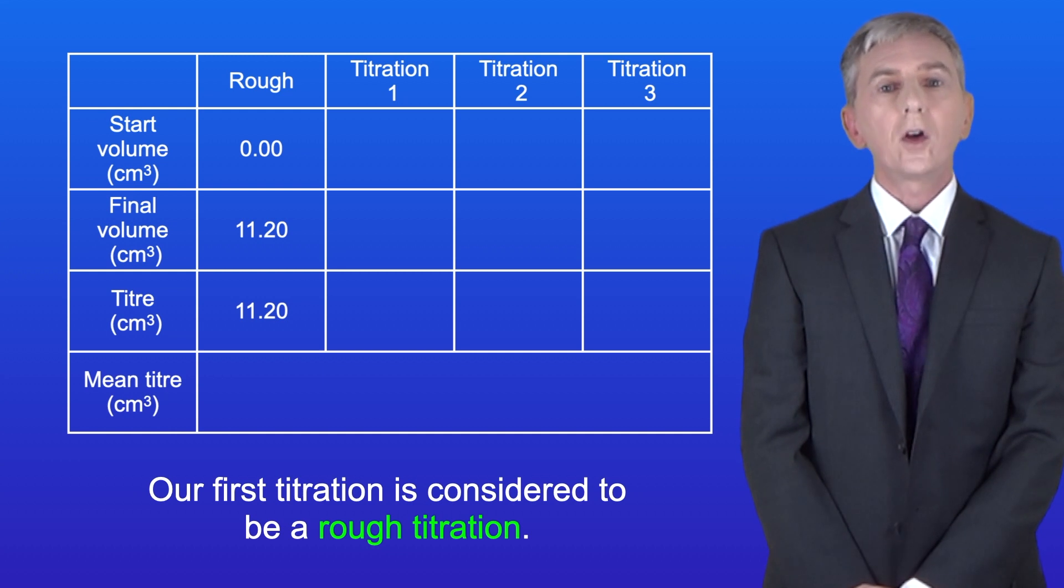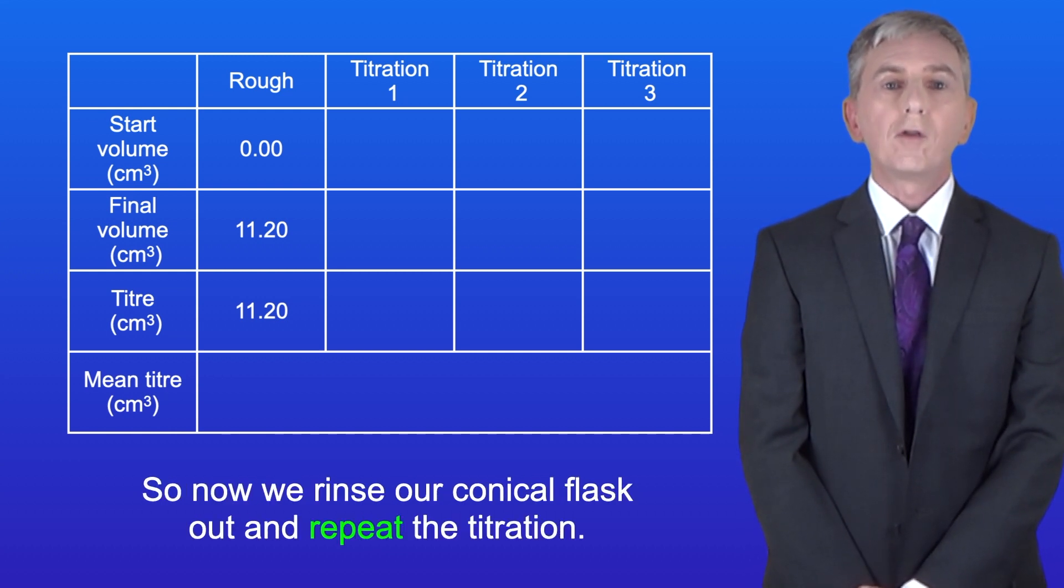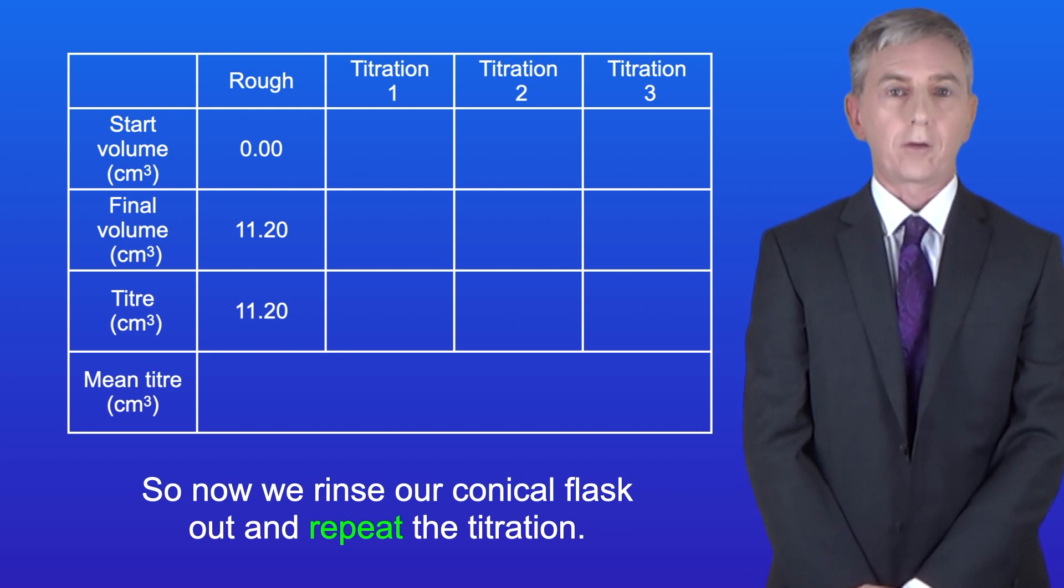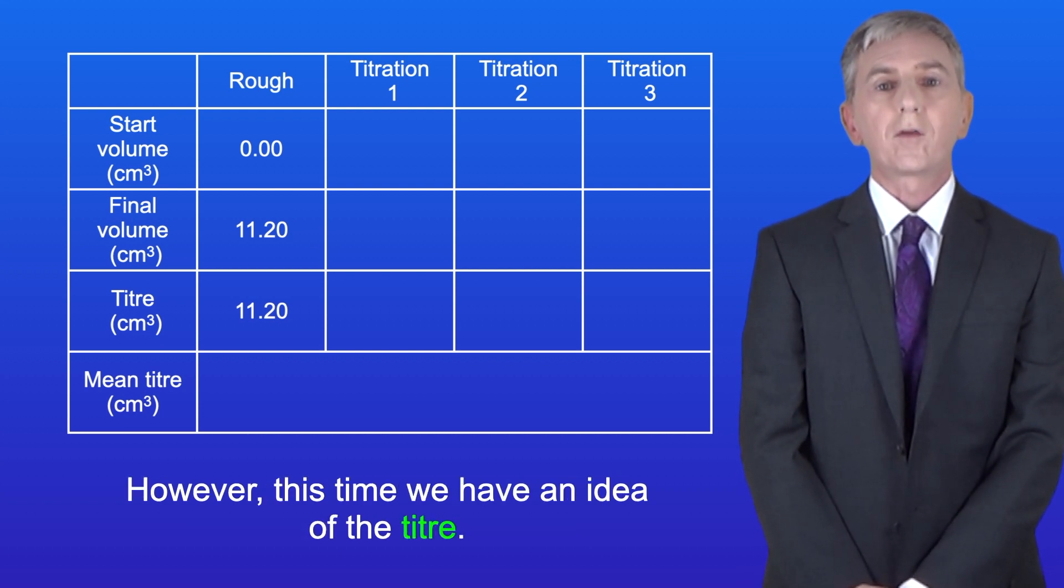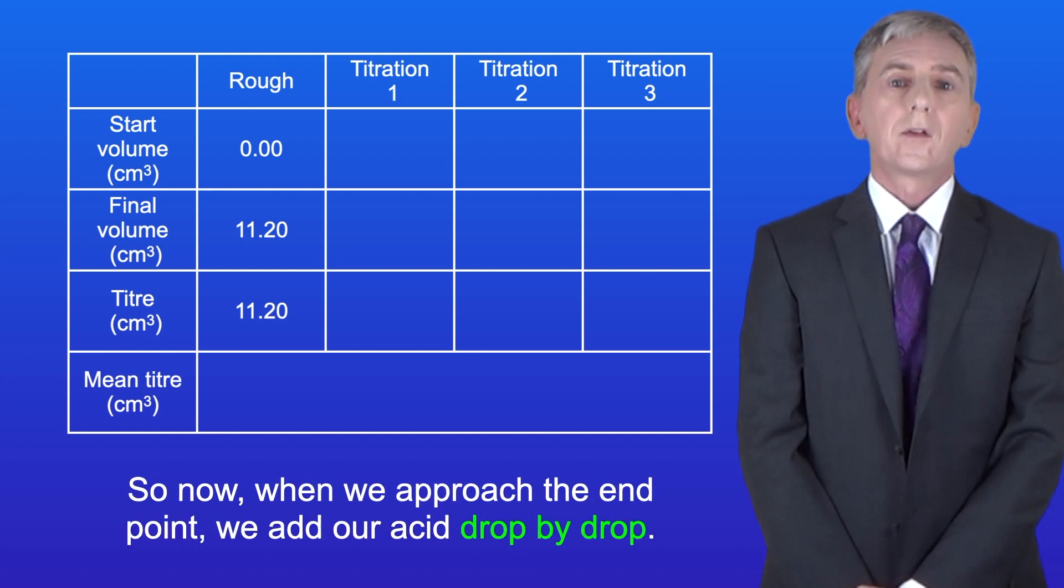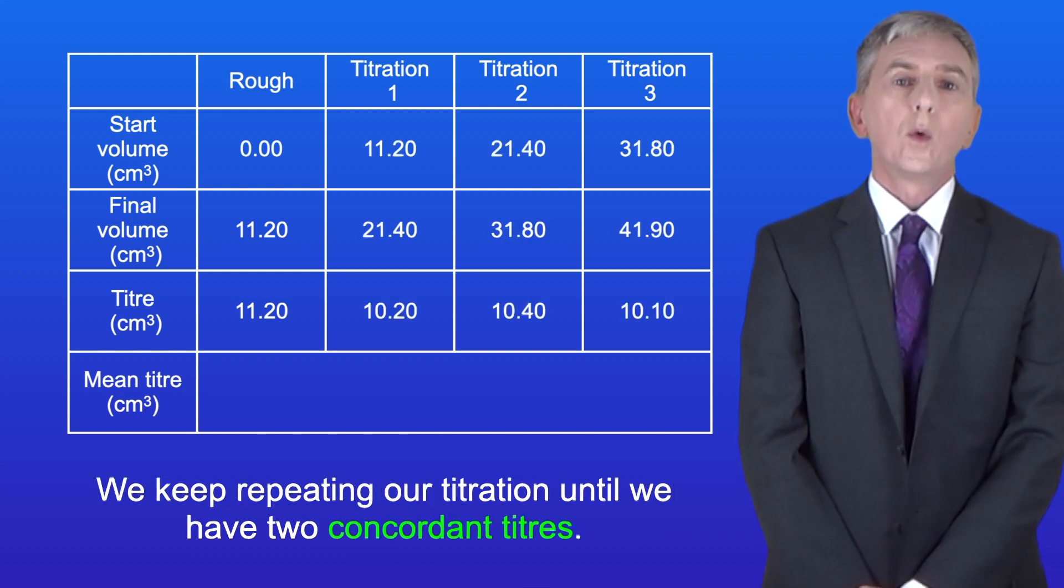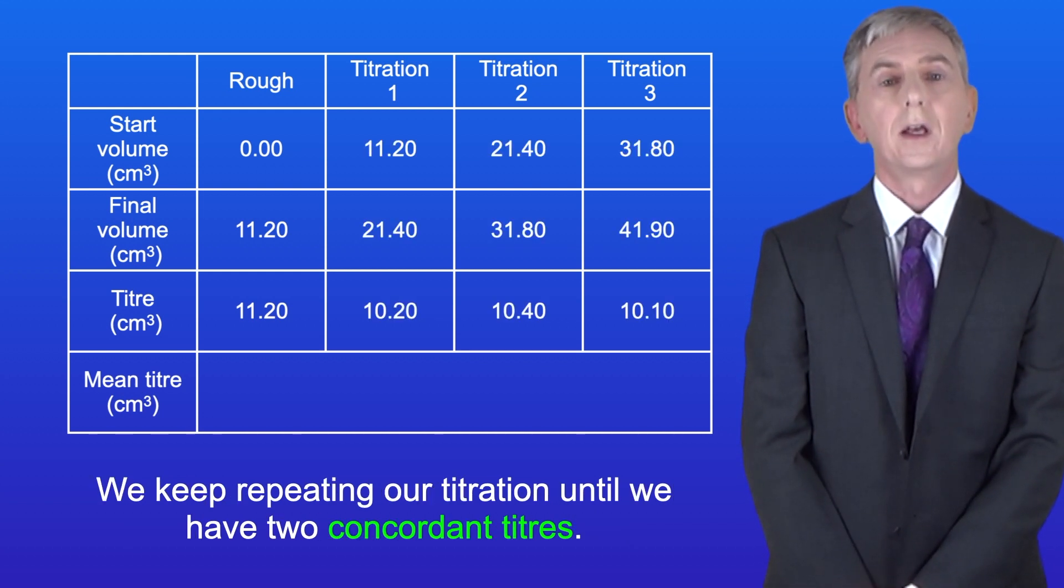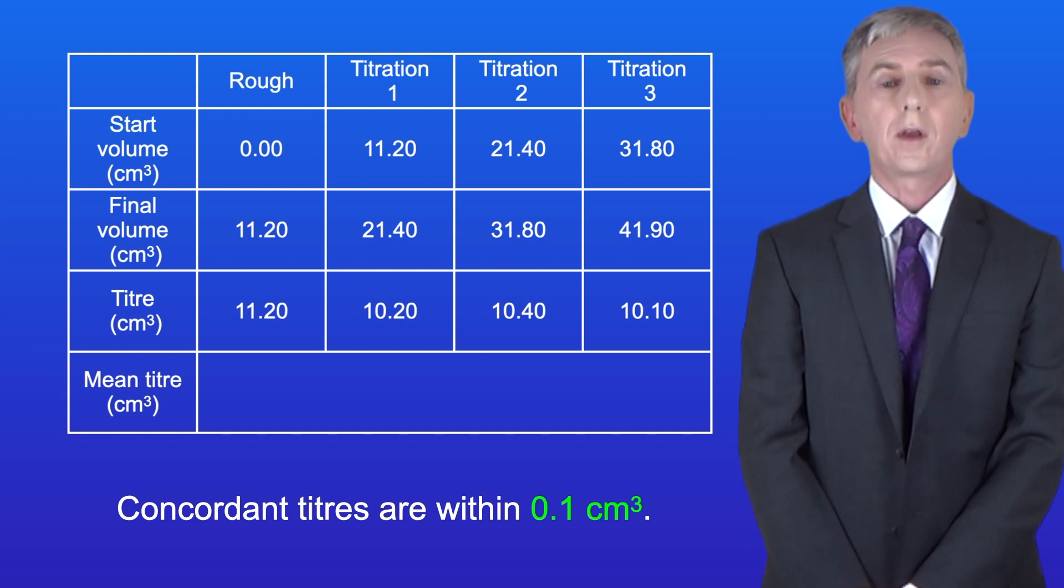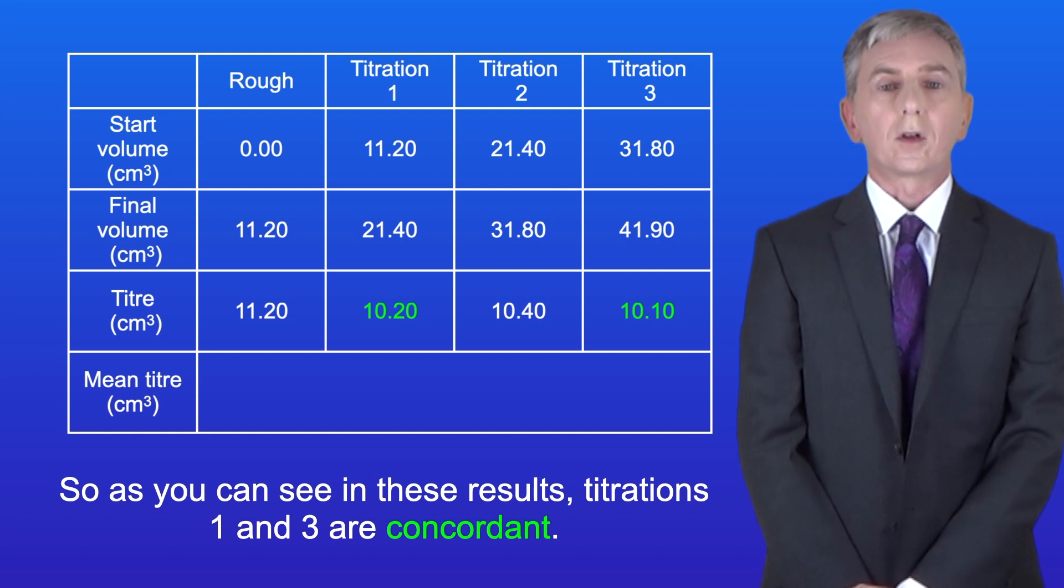Okay now our first titration is considered to be a rough titration. So now we rinse our conical flask and repeat the titration. However this time we've got an idea of the titer. So now when we approach the end point we add our acid drop by drop. We keep repeating our titration until we have two concordant titers. And concordant titers are within 0.1 cm³. So as you can see in these results titrations 1 and 3 are concordant.